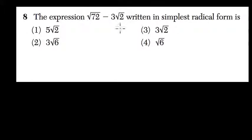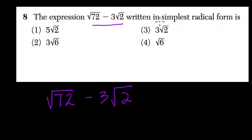All right, so here's a question about radicals or square roots. They want us to simplify this expression. And the way they say it is the expression square root of 72, or radical 72, minus 3 times the square root of 2, written in simplest radical form is